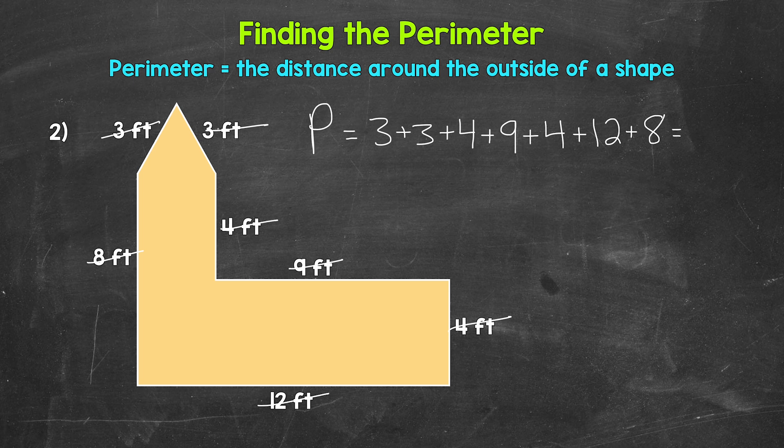So let's add three plus three is six plus four is 10 plus nine is 19, plus four is 23, plus 12 is 35, plus eight is 43. And this is feet. So our perimeter here, 43 feet.